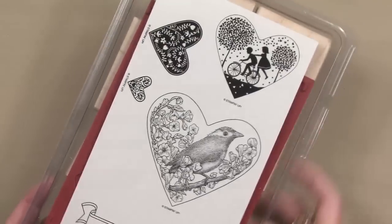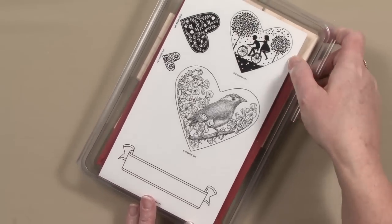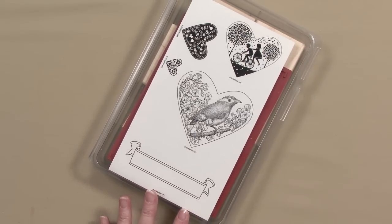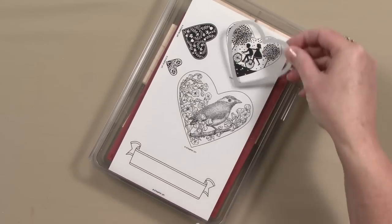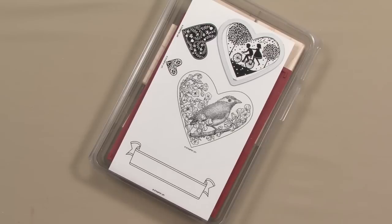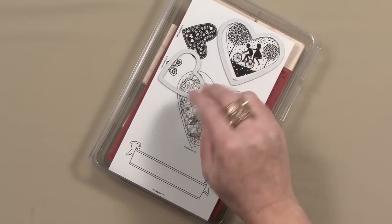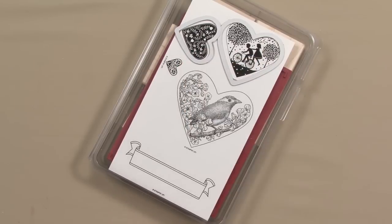I think one of the funnest ways to use our Framelits is with our stamps. The Hearts Collection coordinates beautifully with the Take It to Heart stamp set. And because of the Framelits' unique design, you can layer them on your stamped image and cut them out perfectly.